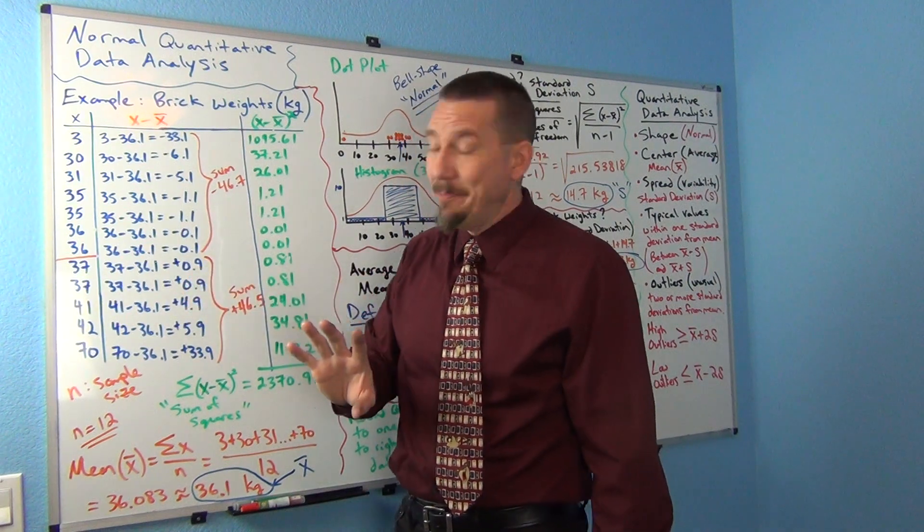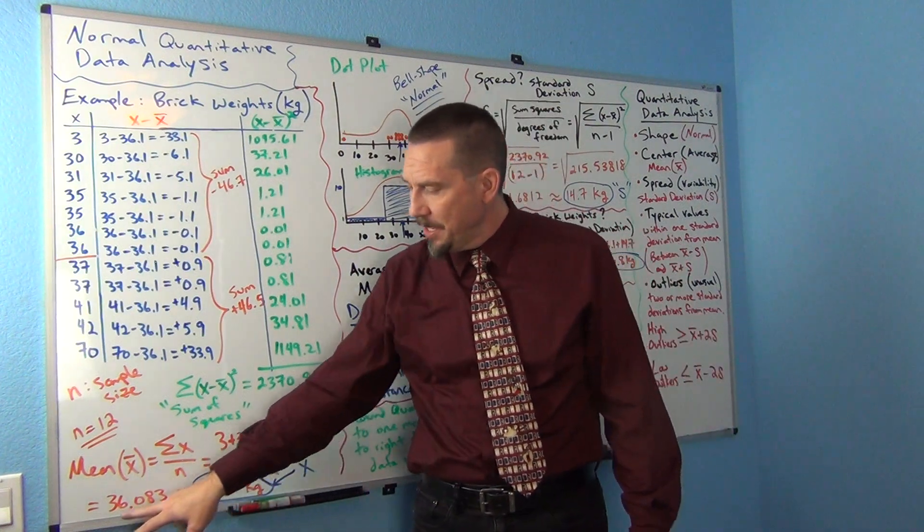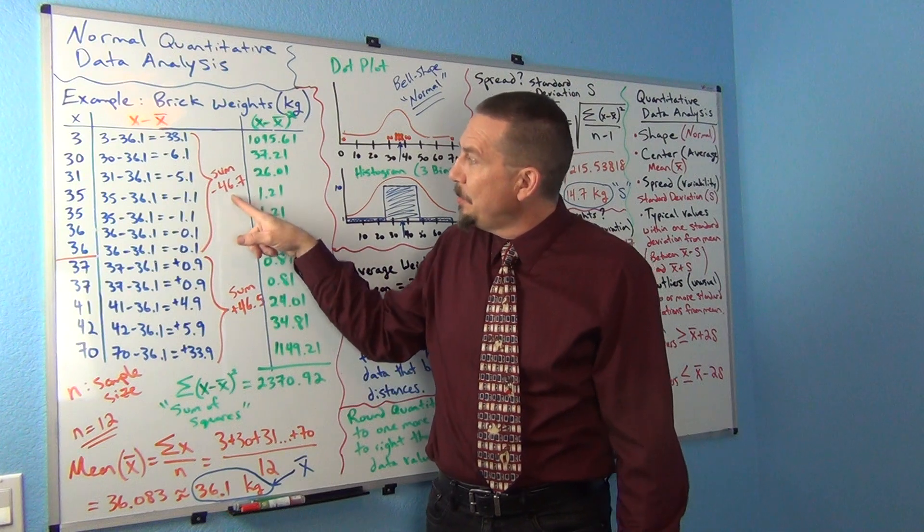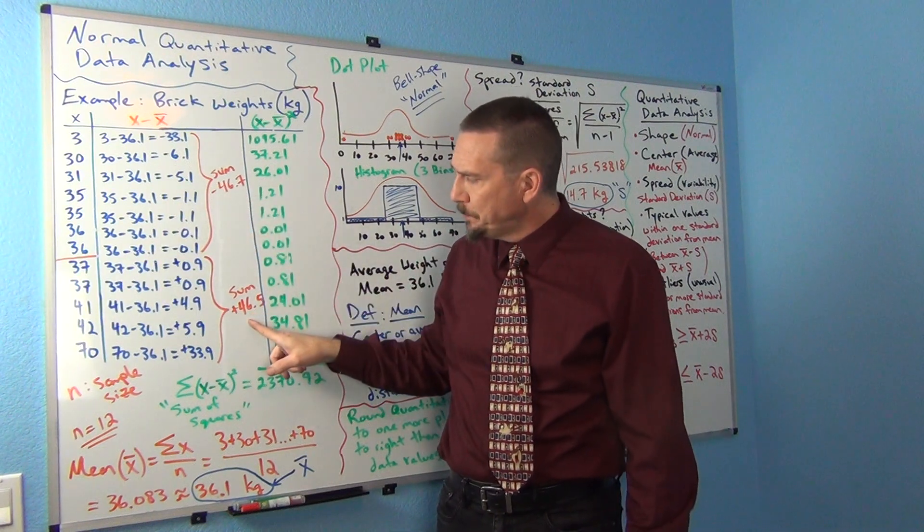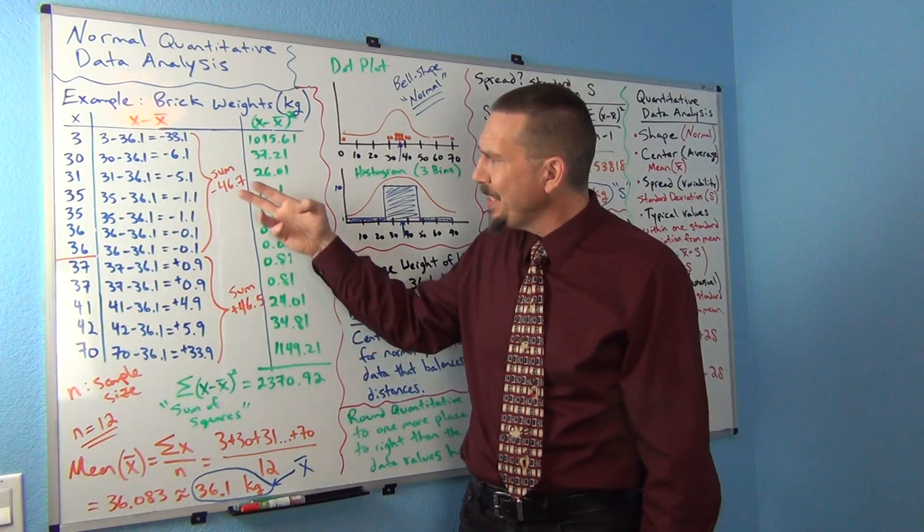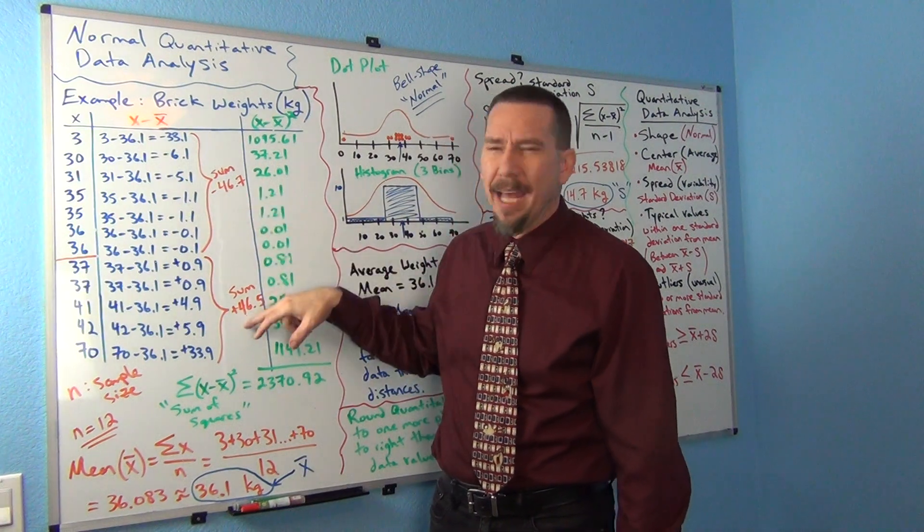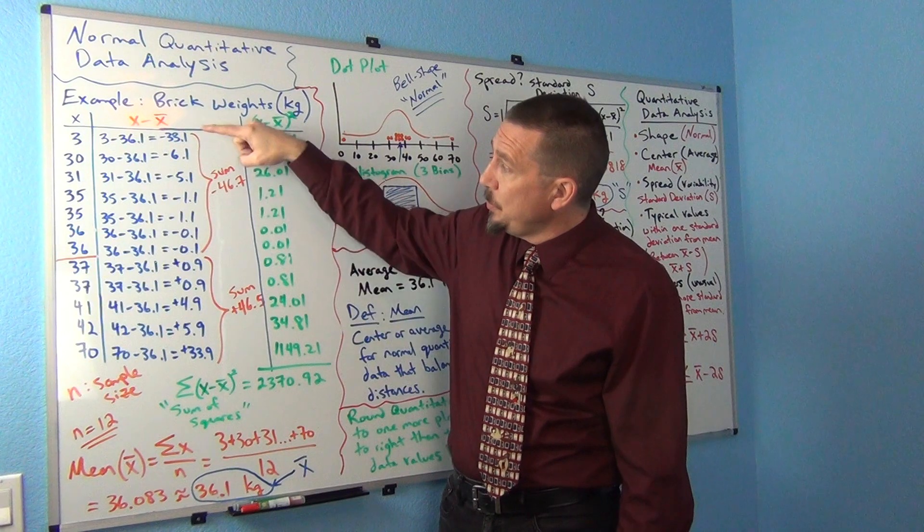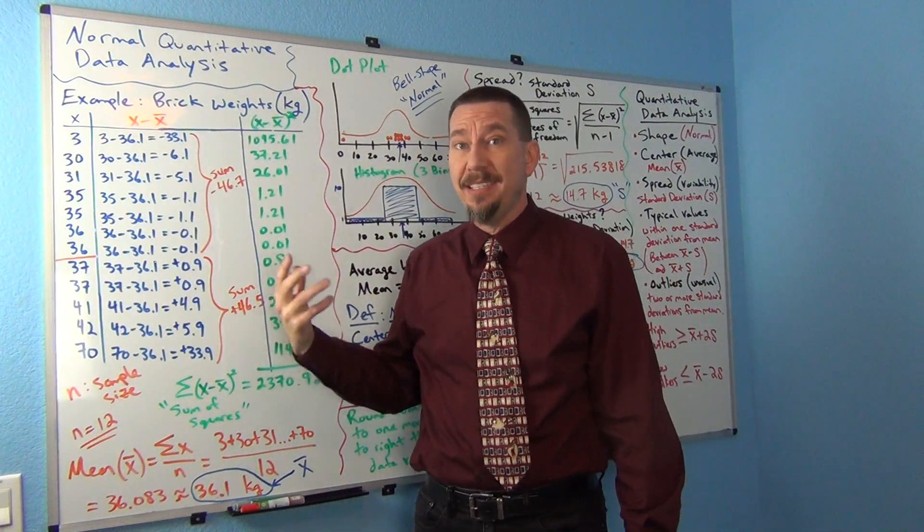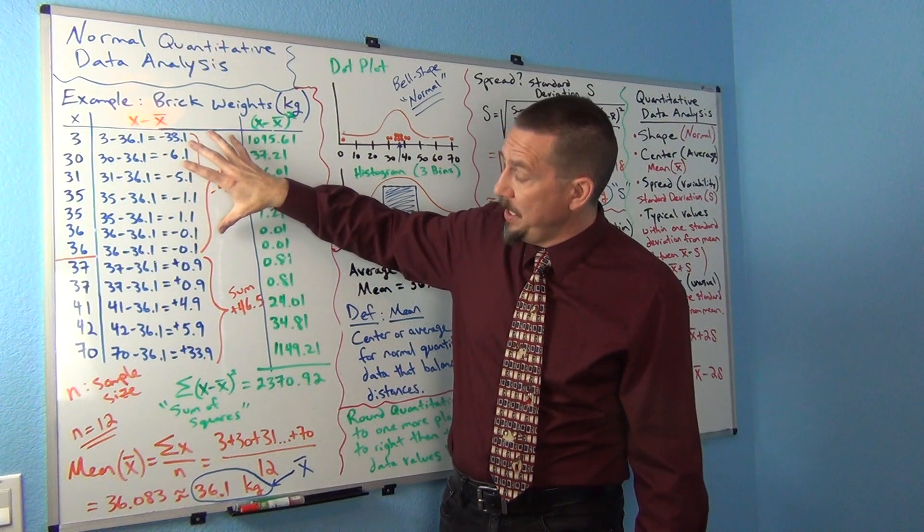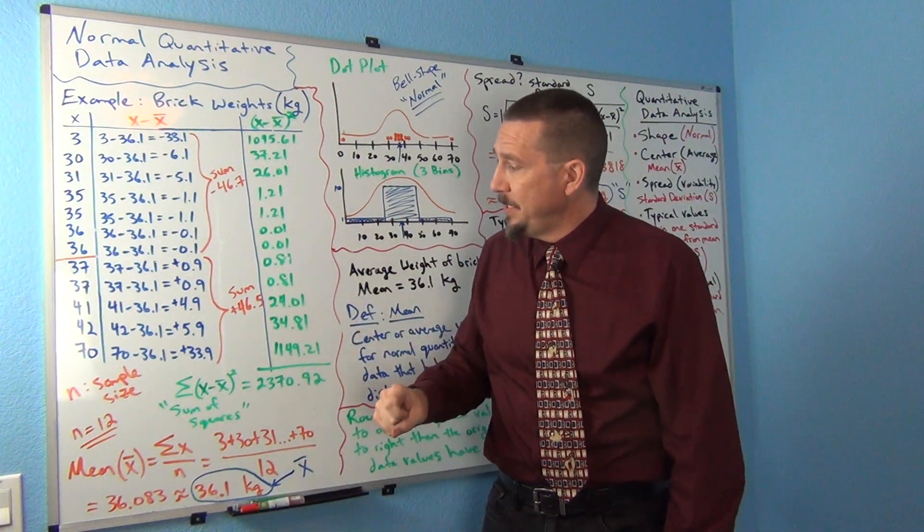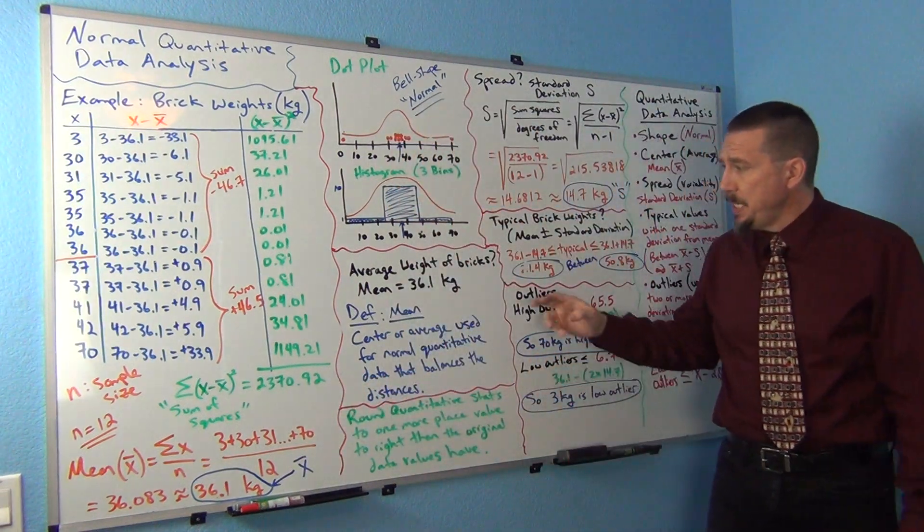Now, rounding errors come into play here. If I had kept it at 36.083 instead of 36.1, this probably would be closer. The bottom sum was negative 46.7, the top sum was 46.5. Usually they will be exactly equal if you didn't round. But you can see how these are supposed to balance out each other. If you take every single number in the data set and subtract the mean and add them up, it will usually almost always add up to zero.